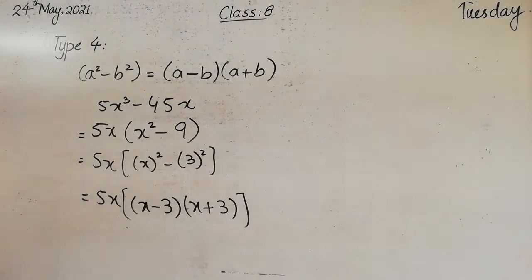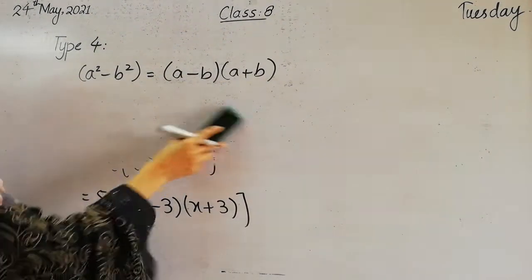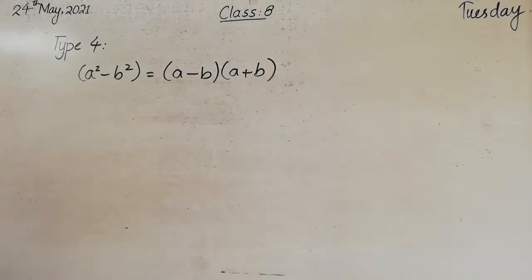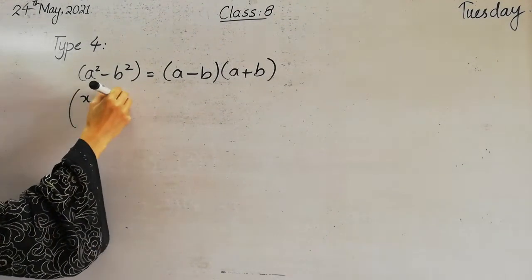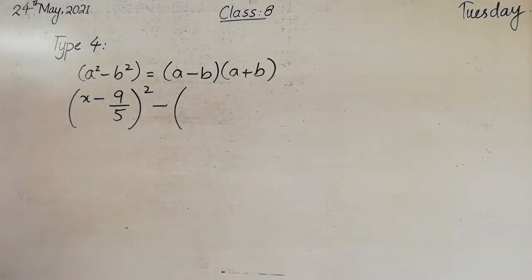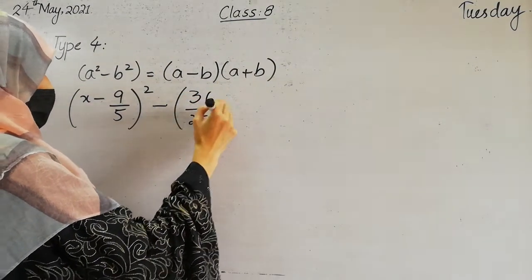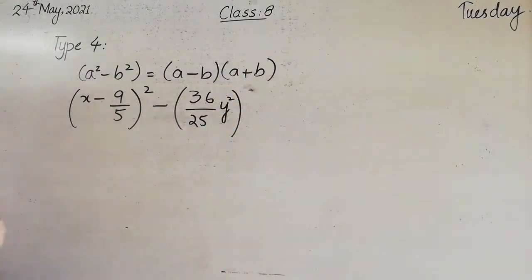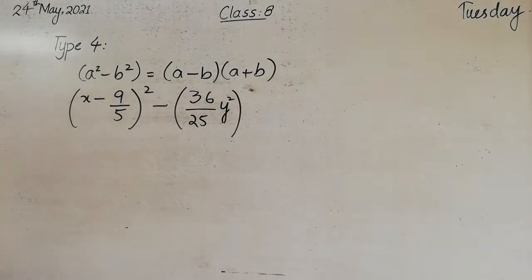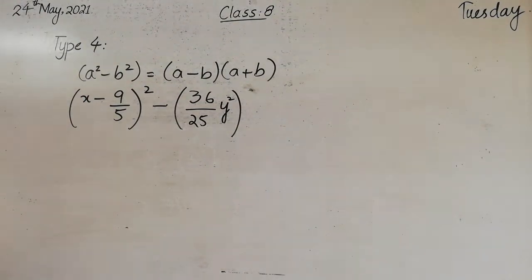Today we will solve some more examples of type 4. The first one is x minus 9 by 5 whole square, minus 36 over 25 y whole square. In the last lesson we have not solved fractions involved, but today we have fractions involved. When we have fractions, the method will remain the same — just here we have fractions.